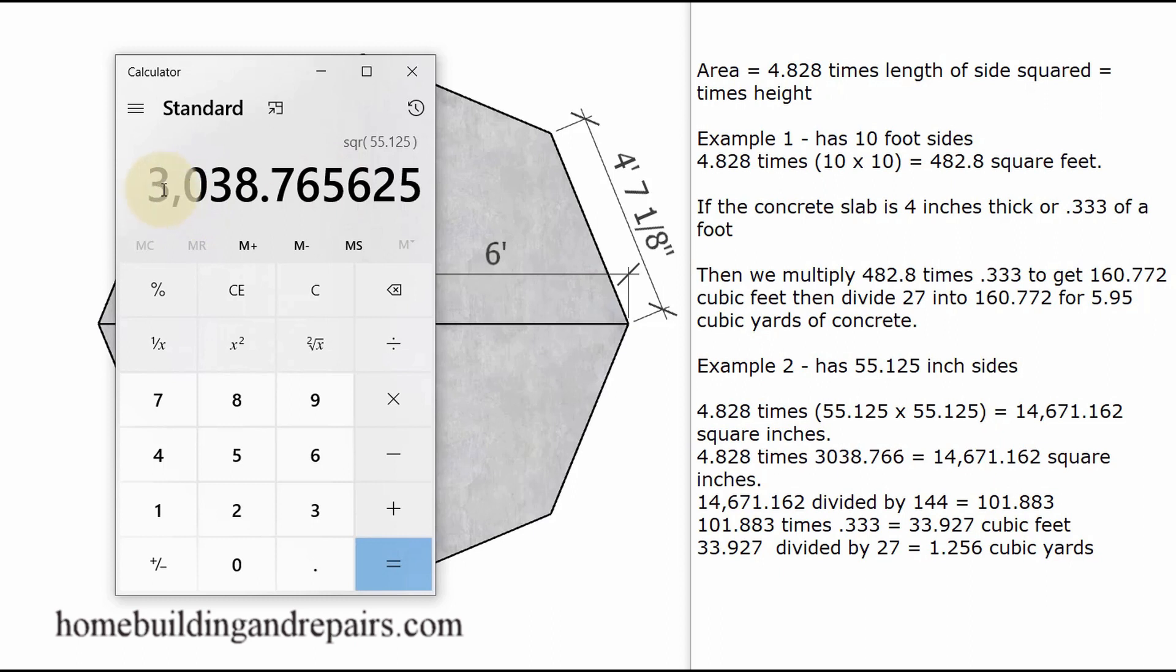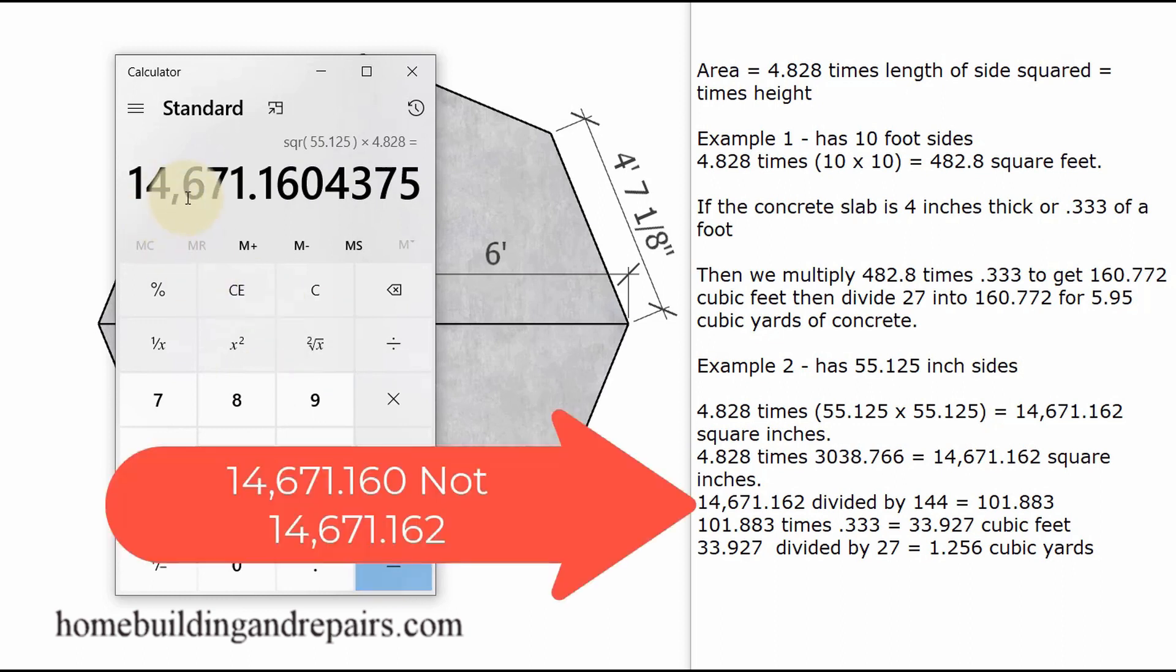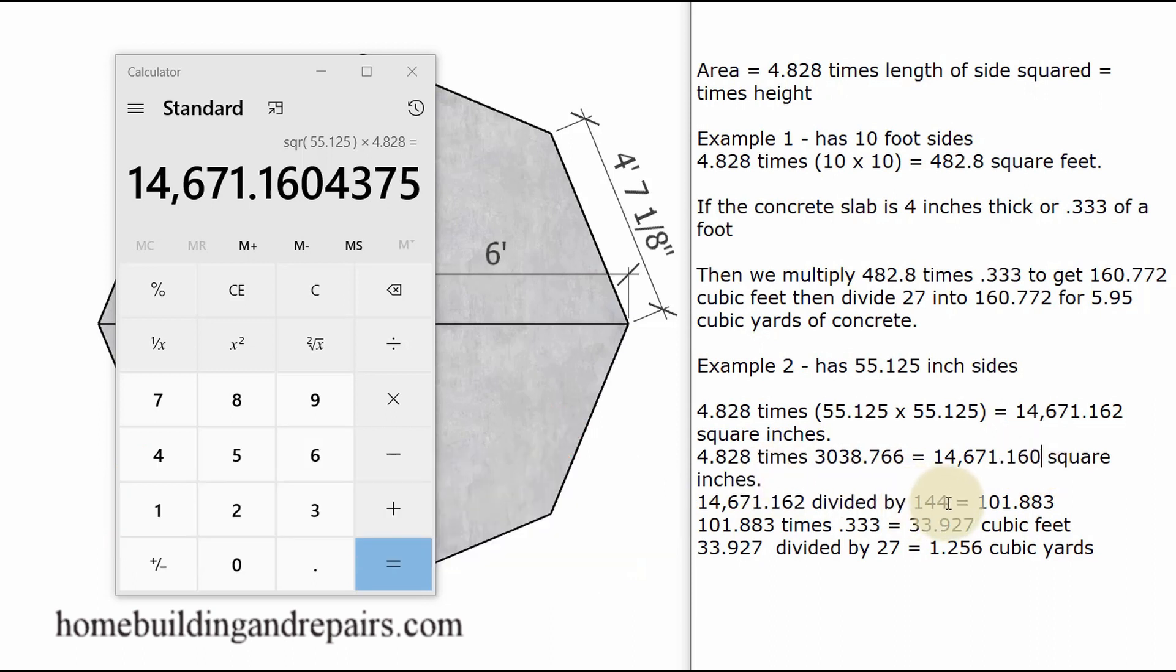So now that we have the square inches of area for this octagon-shaped concrete slab, we can multiply it times 4.828 to provide us with 14,671.160 square inches. And since there are 144 square inches in a square foot, not a cubic foot, square foot.